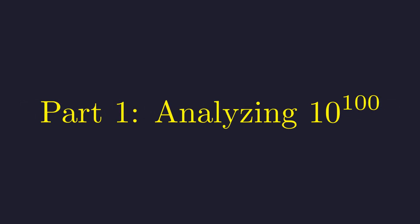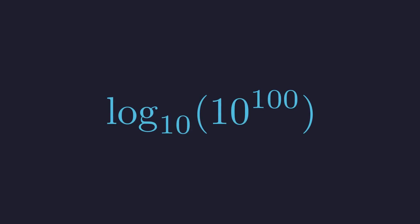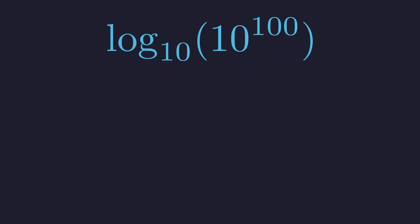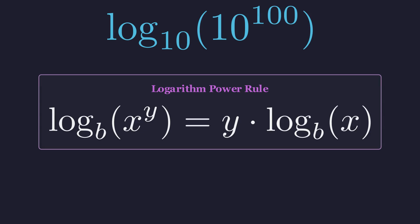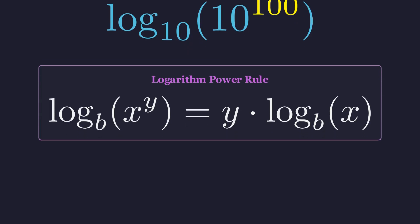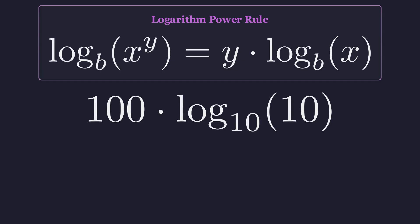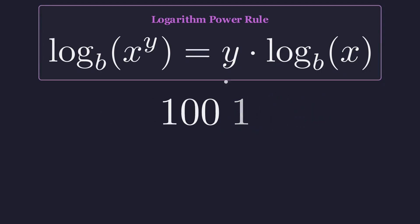Let's tackle the easier one first. We need the base 10 logarithm of 10 to the 100th power. There's a handy property of logarithms here. When you have a logarithm of something raised to a power, you can pull that exponent out front as a multiplier. It's called the power rule. So that 100 comes down to the front, which gives us 100 times the logarithm of 10. And here's the nice part: the base 10 logarithm of 10 is exactly 1. That's basically the definition of logarithm. So we get 100 times 1, which is just 100. So that's our benchmark. Now the real question is, can 100 factorial beat that?